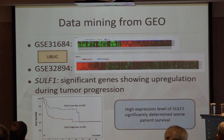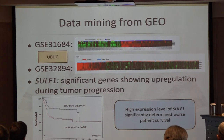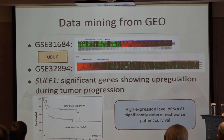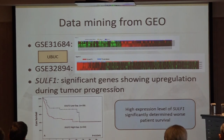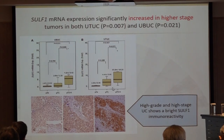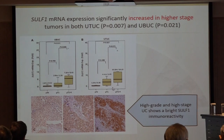We performed data mining from GEO — two GSE databases from GEO, both bladder cancer databases — and they showed that high expression of SOFTIN1 significantly determined worse patient survival rate. From our study, we examined SOFTIN1 transcript and protein expression.